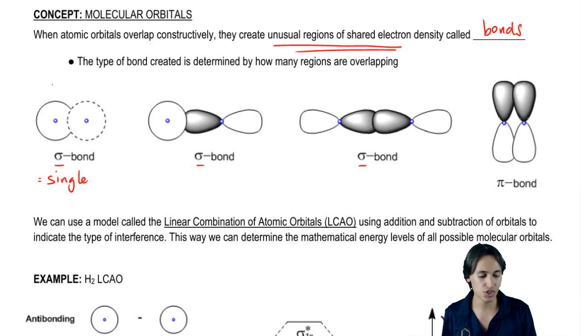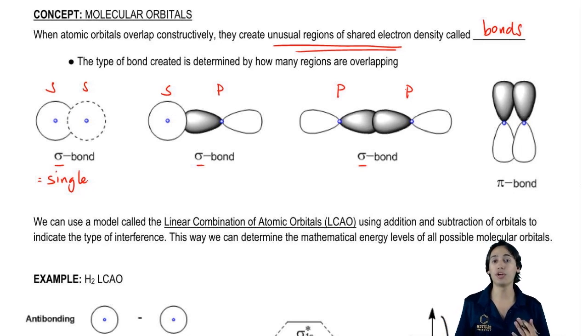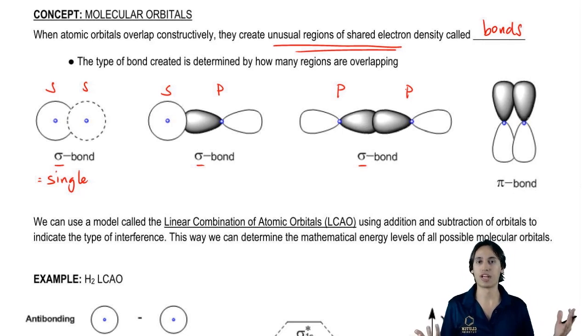We could have an s orbital and an s orbital, or we could have an s orbital and a p orbital, or we could have a p orbital and a p orbital. The important part is that they all count as sigma bonds as long as there's only one region of overlap.